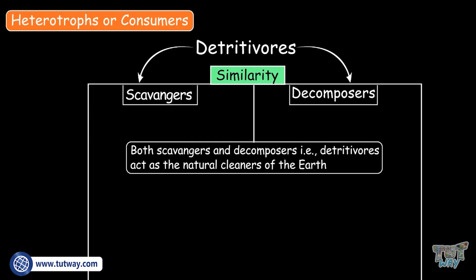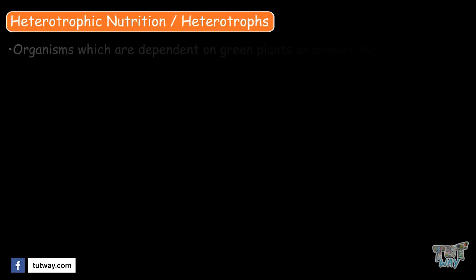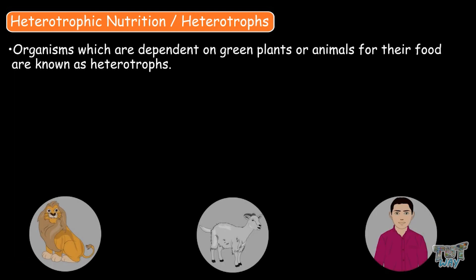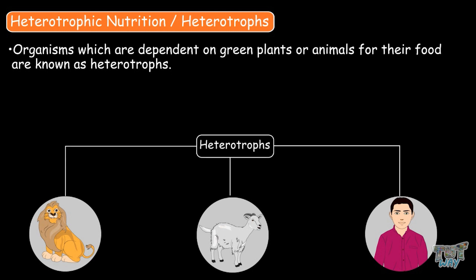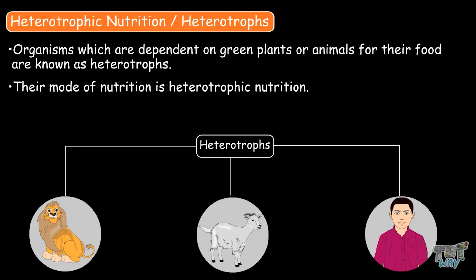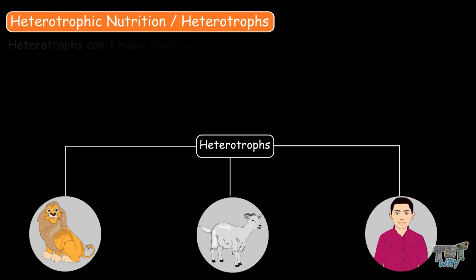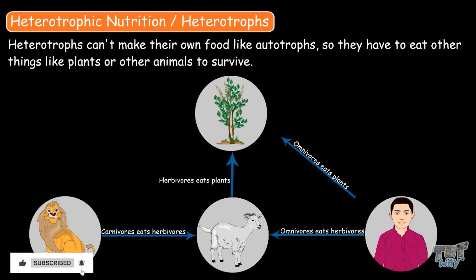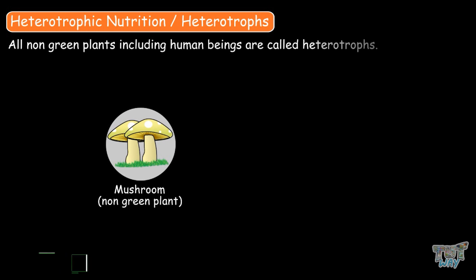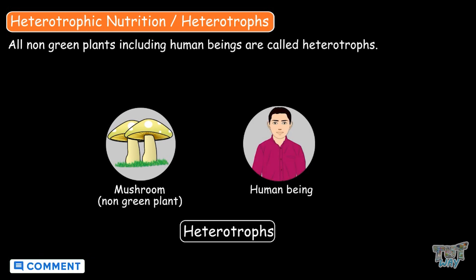Now let's learn about the mode of nutrition of heterotrophs, that is heterotrophic nutrition. Organisms which are dependent on green plants or animals for their food are known as heterotrophs. Their mode of nutrition is called heterotrophic nutrition. Heterotrophs can't make their own food like autotrophs, so they have to eat other things like plants or other animals to survive. All the non-green plants, including human beings, are called heterotrophs.